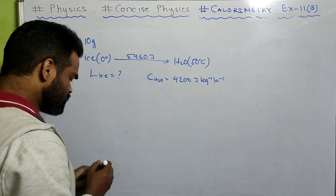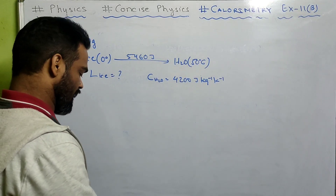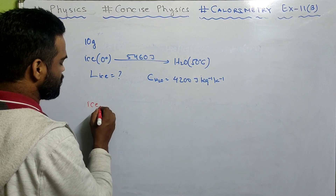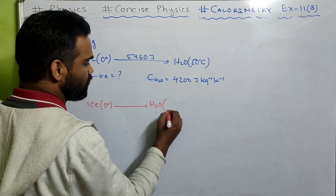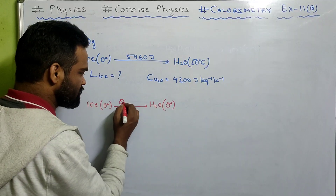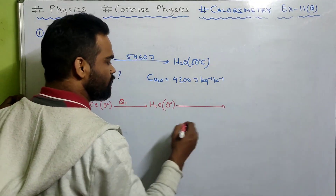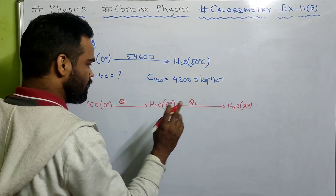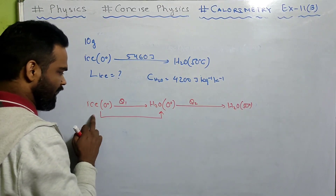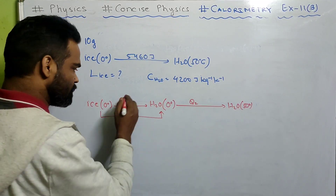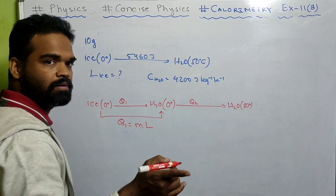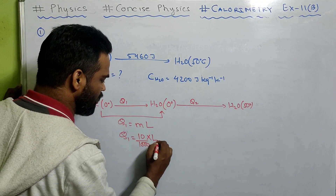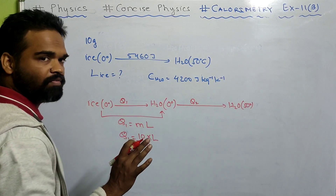This change does not happen in one step. First, ice at 0 degree changes to water at 0 degree — there is a change of state, so Q1 equals M into L. Mass of ice is 10 by 1000 kg, so Q1 equals (10/1000) into L. L of ice is what we are supposed to find.